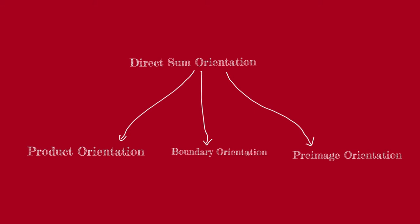For example, the boundary of a manifold is also a manifold, so we can talk about the orientation on the boundary. We want to define the orientation on the boundary that is induced by the orientation on the manifold, and so on. But all of these are going to come from the main idea of direct sum orientation.